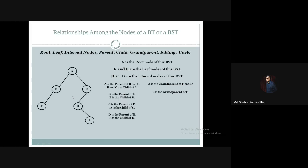Now let us discuss about the sibling relationship. Nodes that share the same parent are called siblings. B and C are considered siblings to each other because both have A as their parent. F has no sibling because B has no other child. D has no sibling because C has no other child. E has no sibling because D has no other child. So in our example, only B and C are siblings; F, D, and E have no siblings.